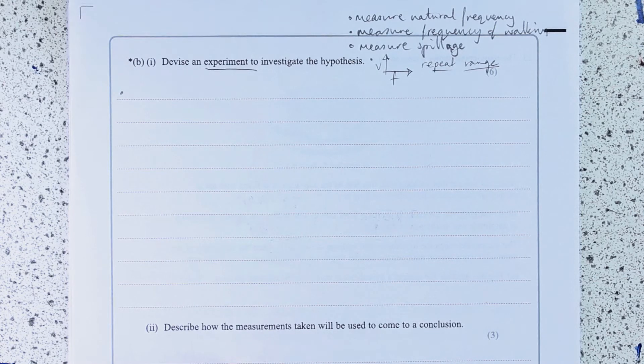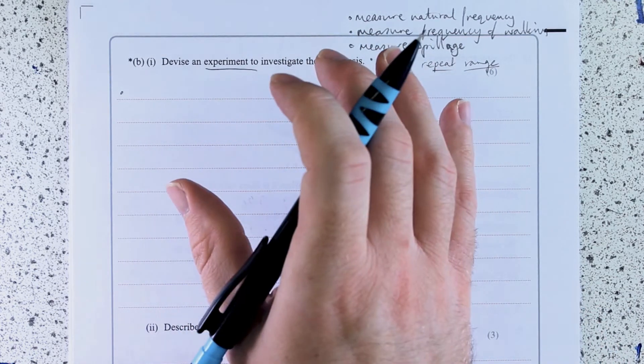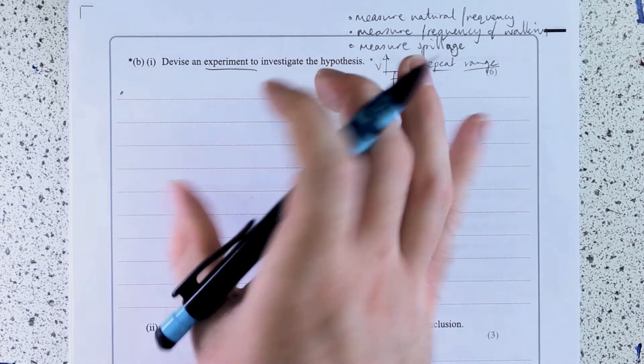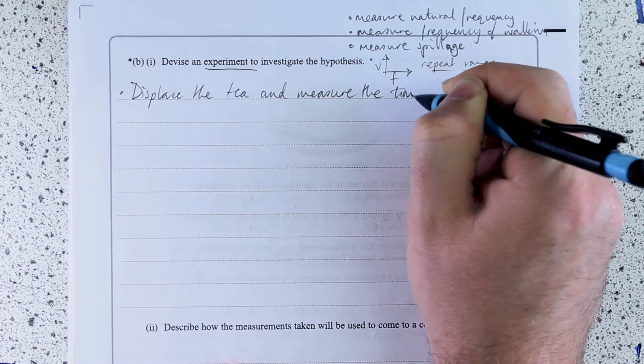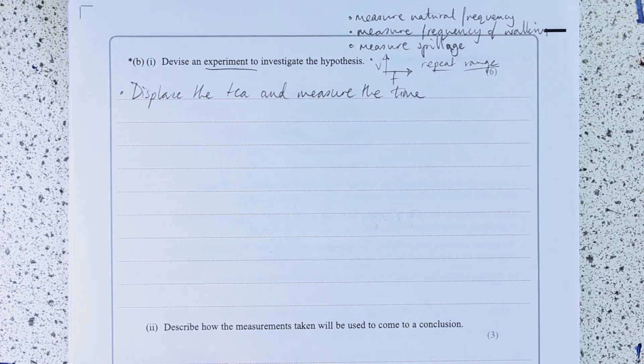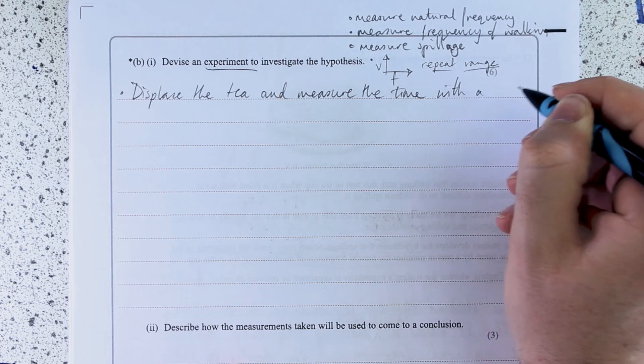So how am I going to say that? I'm going to displace the tea. I'm going to sort of oscillate the tea. And I'm going to get details in there, like, because I think I can do this with a stopwatch. I think that's going to be accurate enough.